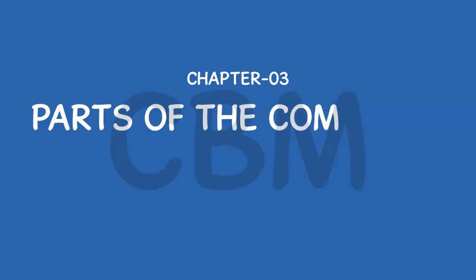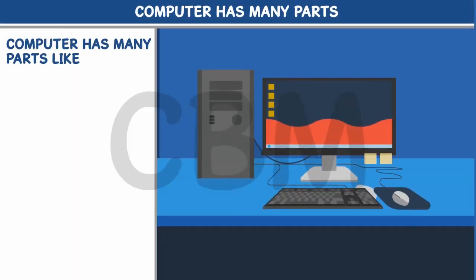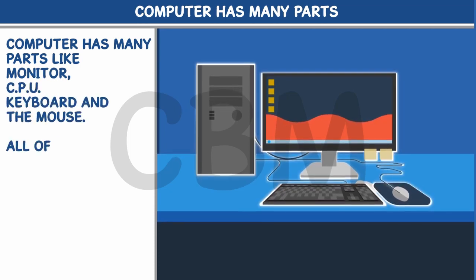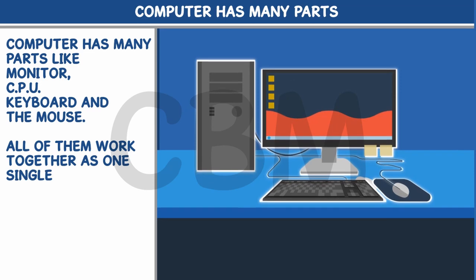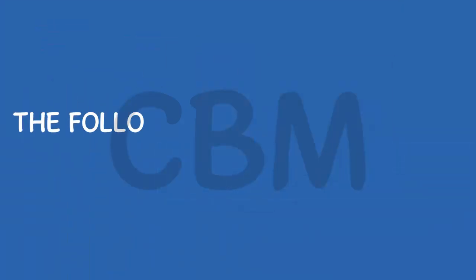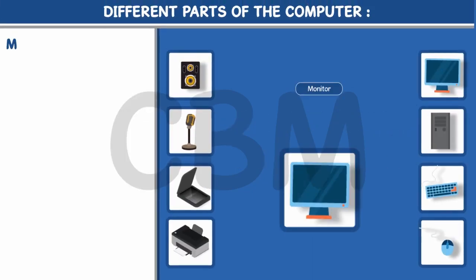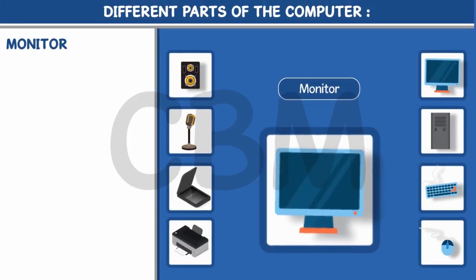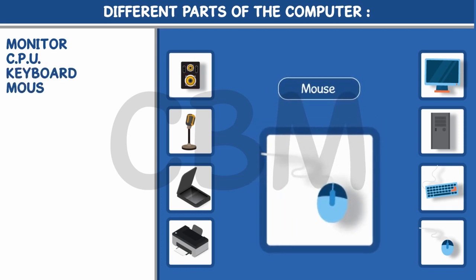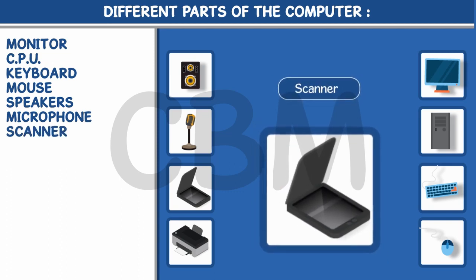Chapter 3: Parts of the Computer. A computer has many parts like Monitor, CPU, Keyboard and Mouse. All of them work together as one single unit. The following are the different parts of the computer: Monitor, CPU, Keyboard, Mouse, Speakers, Microphone, Scanner, and Printer.